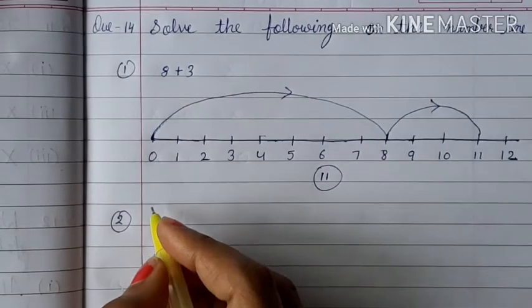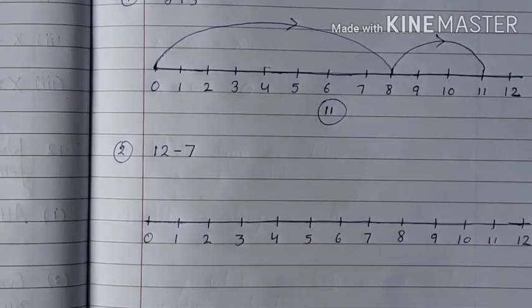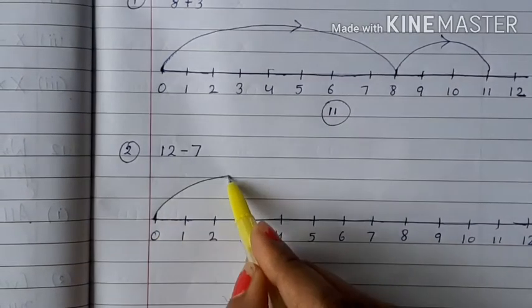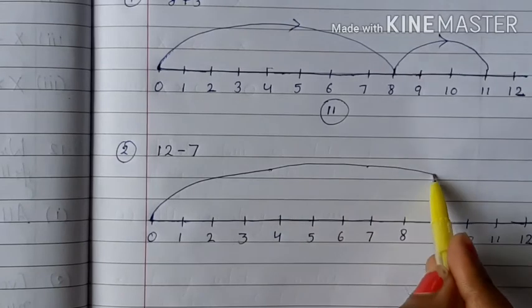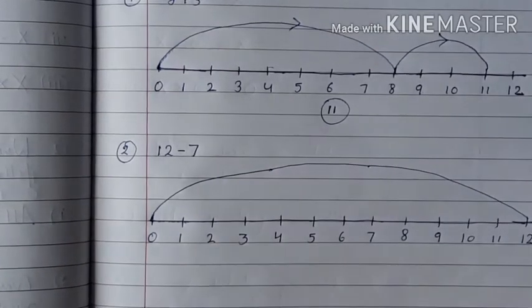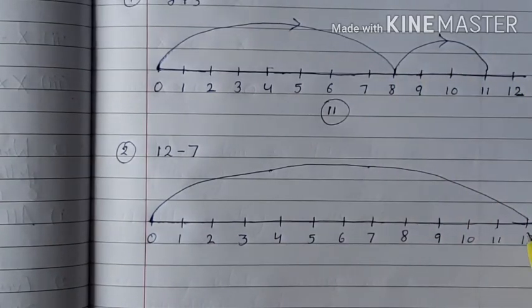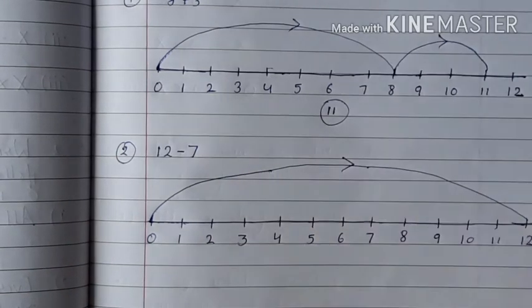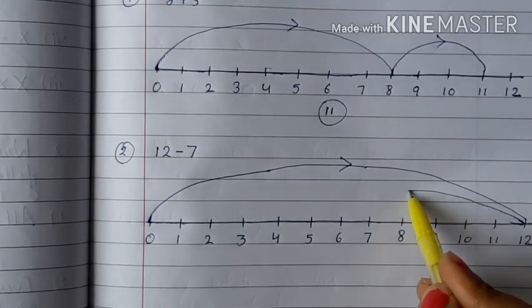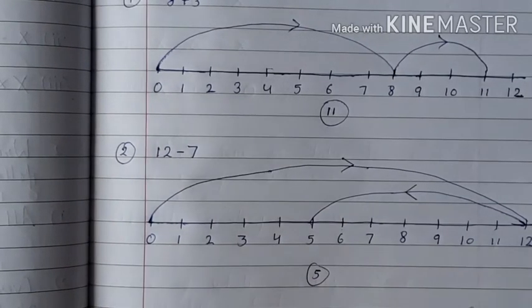Second one is 12 minus 7. Again we draw number line. And here we do subtraction. So we go from 0 to 12. And after then minus 7, so we come to left side. When we add we go to right side, and when we subtract we go to left side. So minus 7, we count 1, 2, 3, 4, 5, 6, 7. So we come back to 5. So answer is 5.